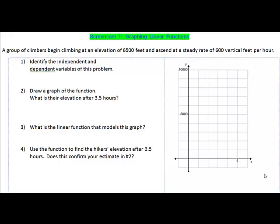Our problem states that a group of climbers begin climbing at an elevation of 6,500 feet and ascend at a rate of 600 vertical feet per hour. We are asked to identify the independent and dependent variables of the problem, draw a graph of the function, find their elevation after 3.5 hours, then write a linear function to model what is happening, and finally use the function to find the hiker's elevation after 3.5 hours and see how that compares to the answer that we got in number two.